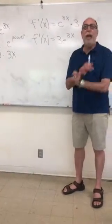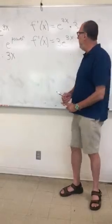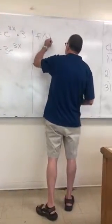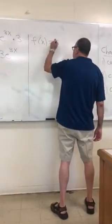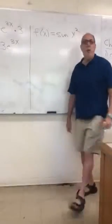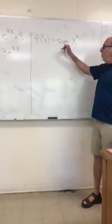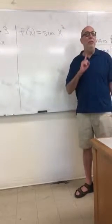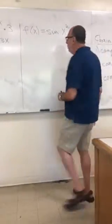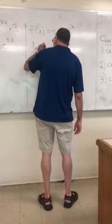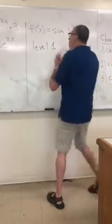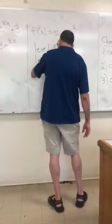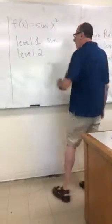We don't have to think about function composition at all in order to be able to do this. Let's look at another example. Suppose we have f of x equal to the sine of x squared. We know how to take the derivative of sine x — that's cosine — but the angle is not x, it's more complicated, so we have to use the chain rule. Level 1: what are we doing with the function overall? We're taking the sine of an angle. Level 2: what is that complicated angle? x squared.